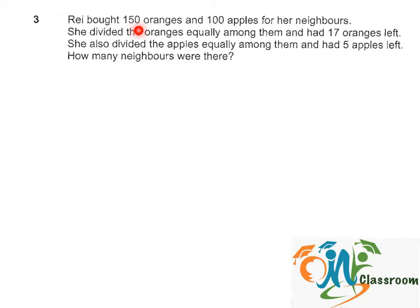Roy bought 150 oranges and 100 apples for her neighbors. She divided the oranges equally among them and had 17 oranges left. She also divided the apples equally among them and had 5 apples left. How many neighbors were there?